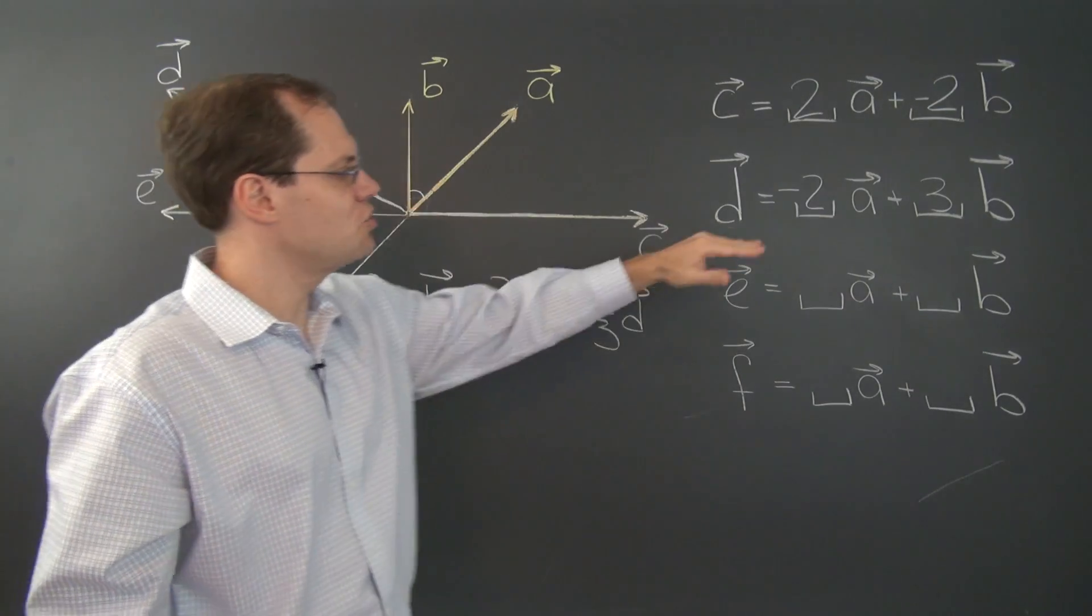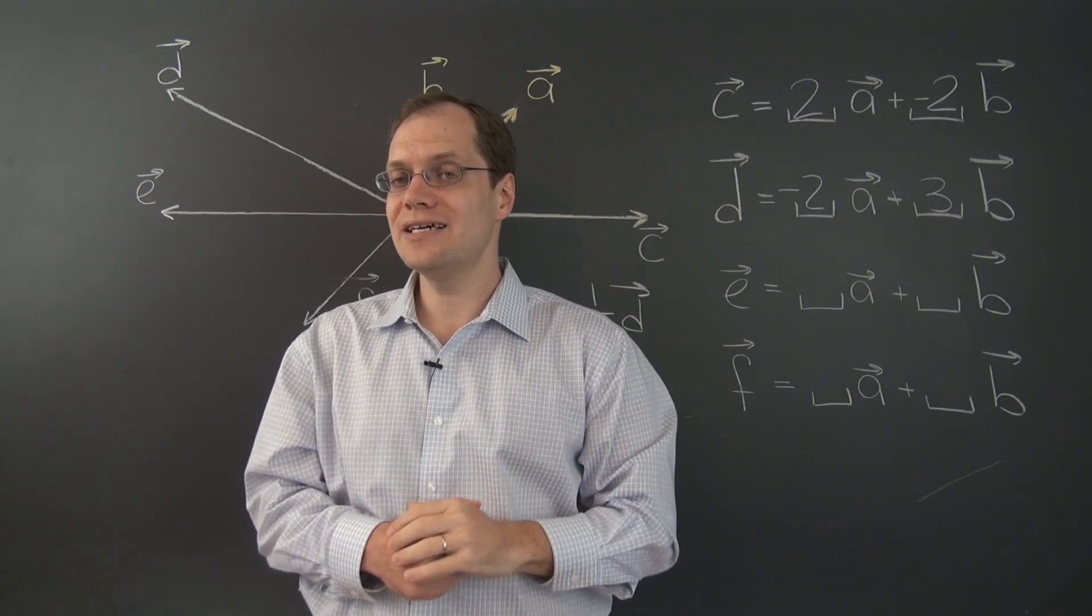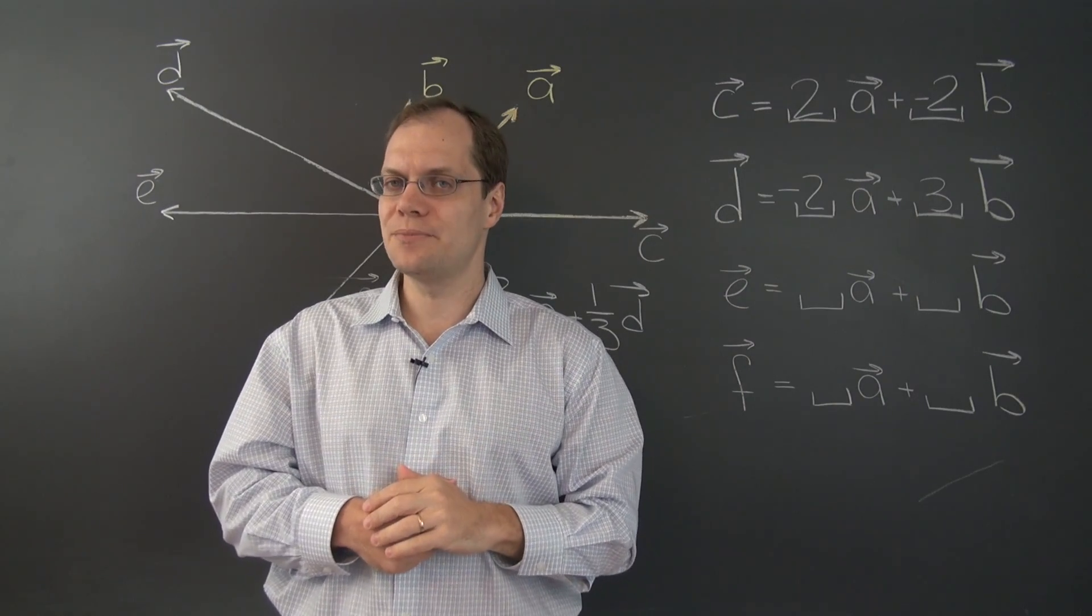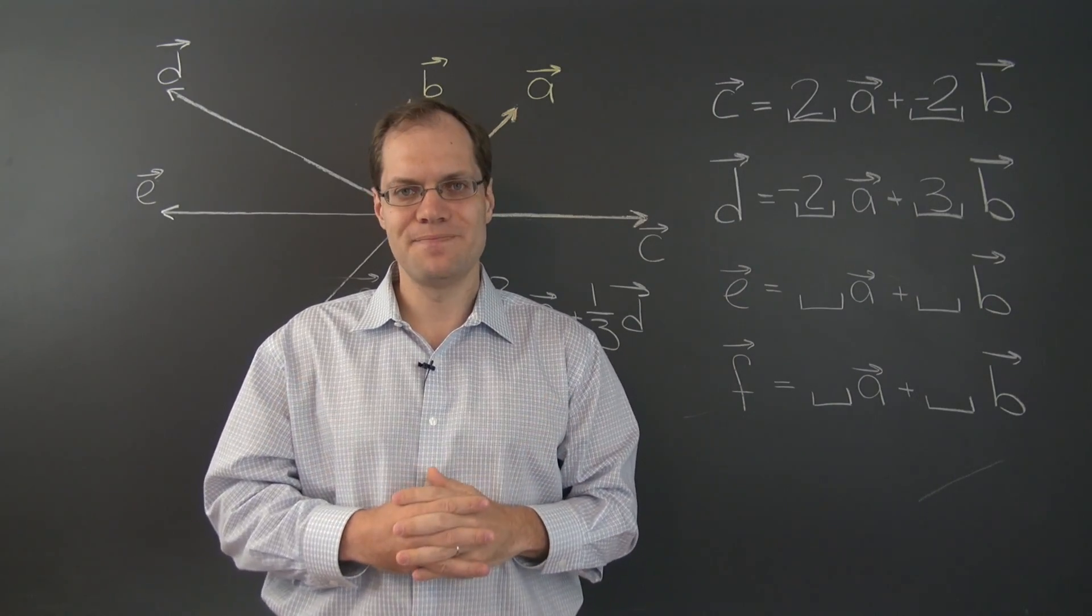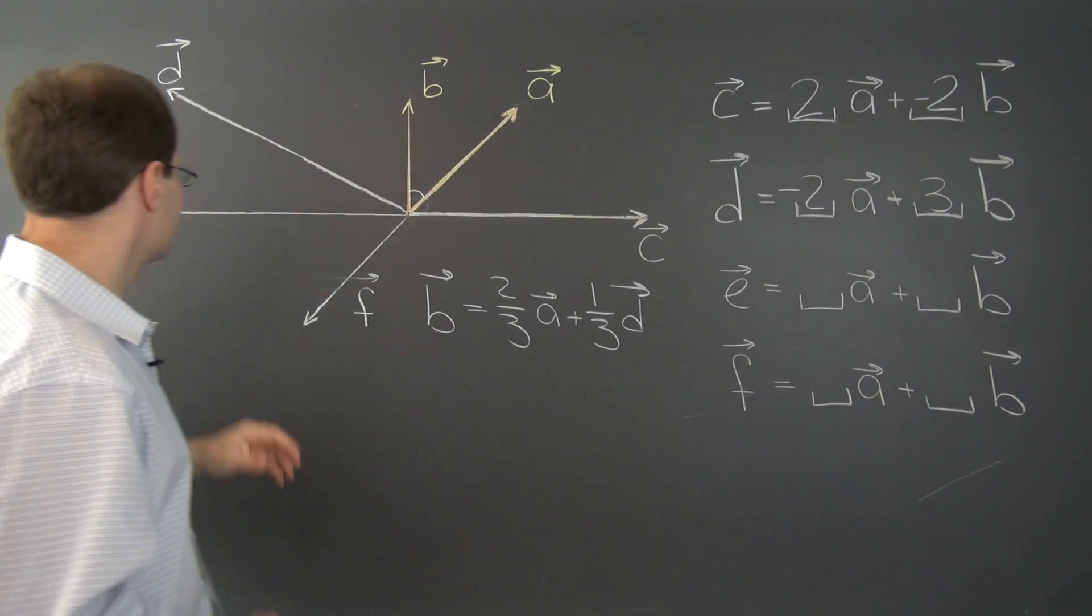So there are two ways to get d, which is nice because this was the hardest of the four examples on the board, and now we're done with it. Let's move on to the next vector, e.